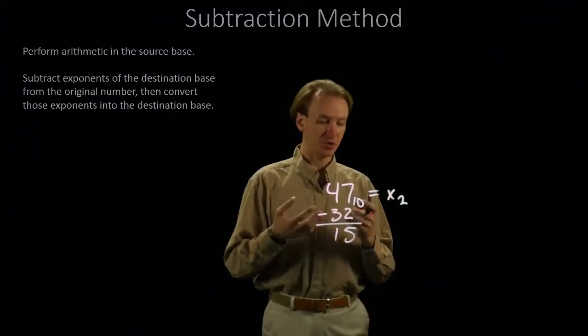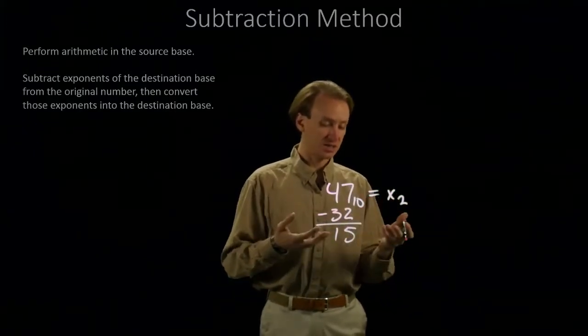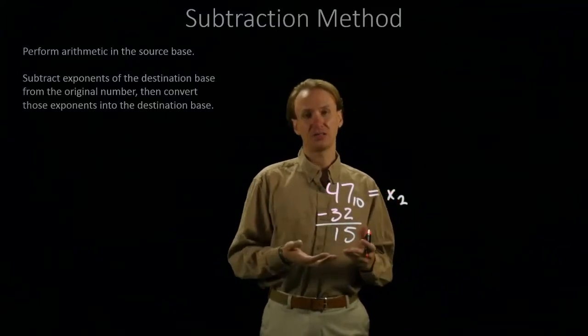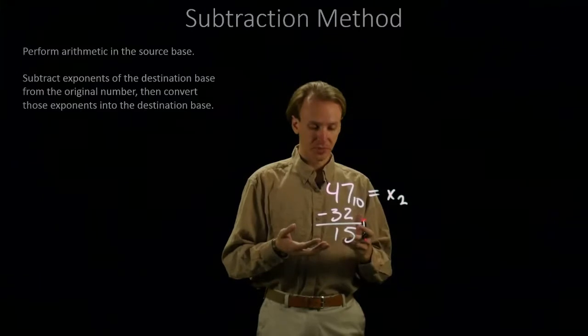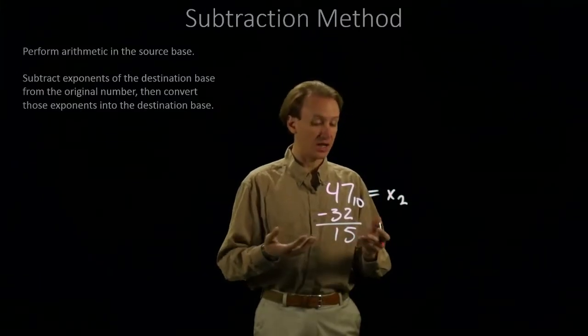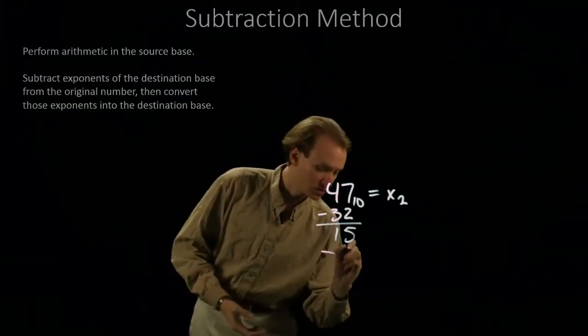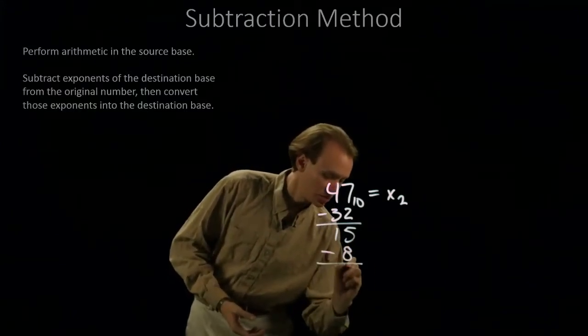The next smallest exponent in base 2 is 16. But again, 16 is larger than 15, so I can't do that subtraction. Instead, I'll go to the next smallest exponent, which is 8. Since 8 is smaller than 15, I'll subtract off 8. This will leave me with 7.